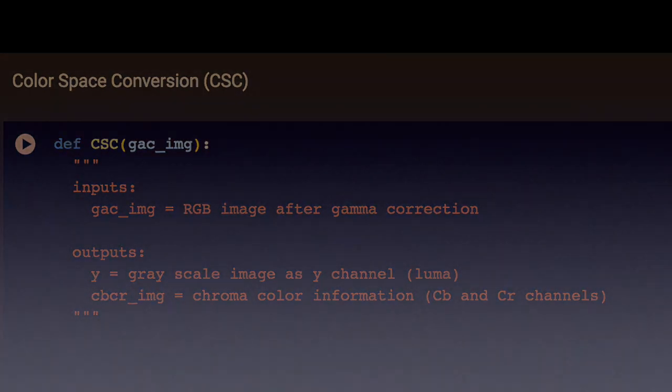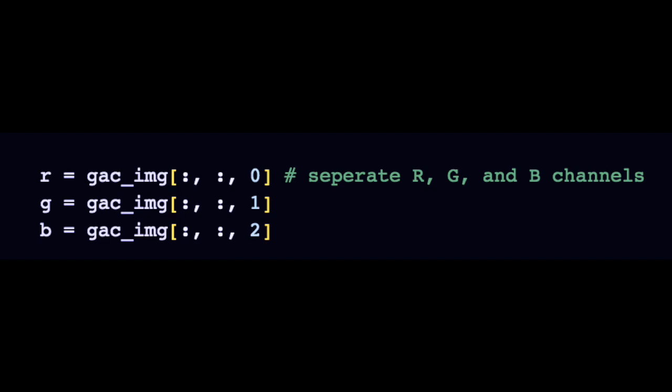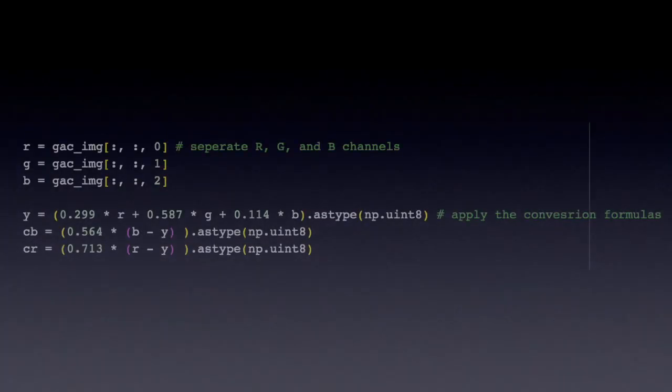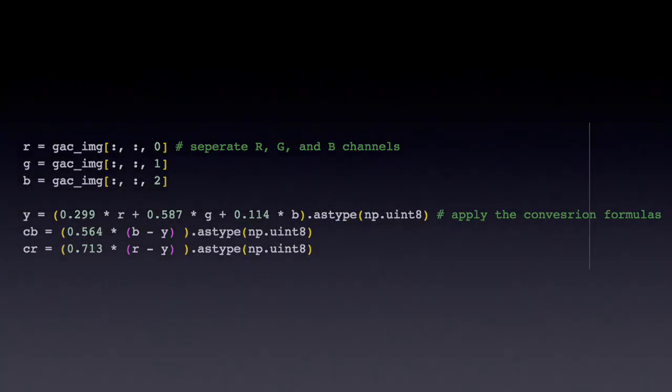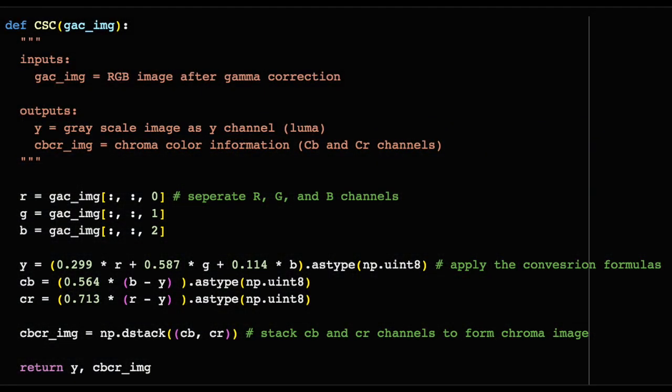The actual code is really very simple. You extract the R, G, and B channels from the RGB image, and then you apply the formulas. Just like in gamma correction, since adding, subtracting, or multiplying arrays of the same size from each other results in element-wise operations in NumPy, the code becomes very simple. Finally, we use np.dstack to stack the images across a third dimension, and then return the image.